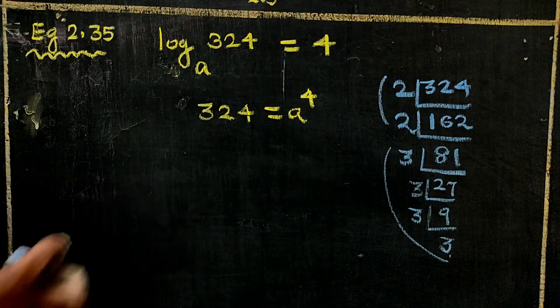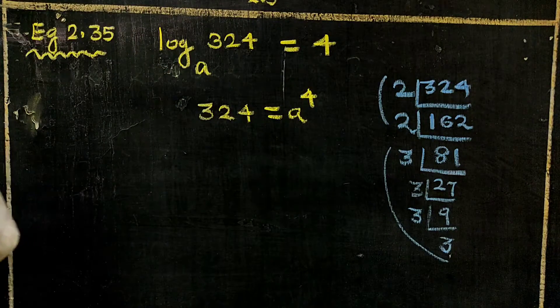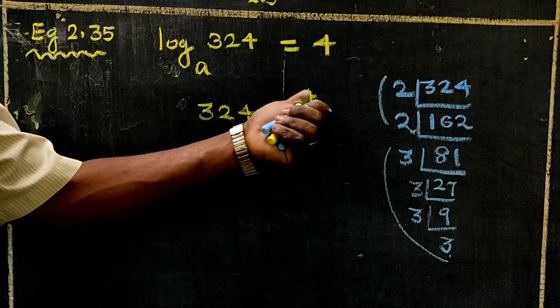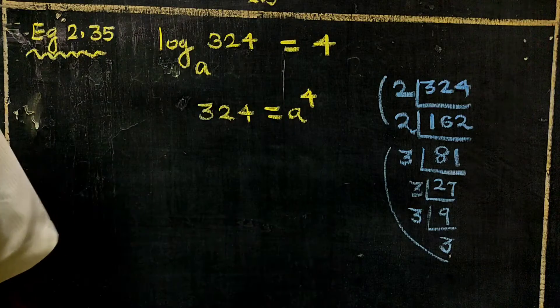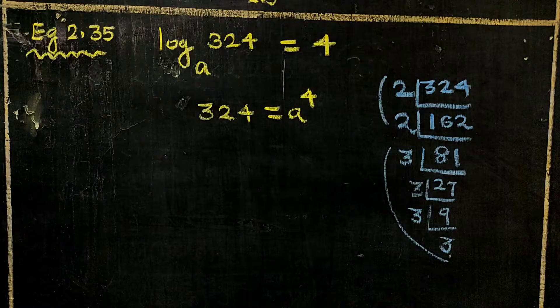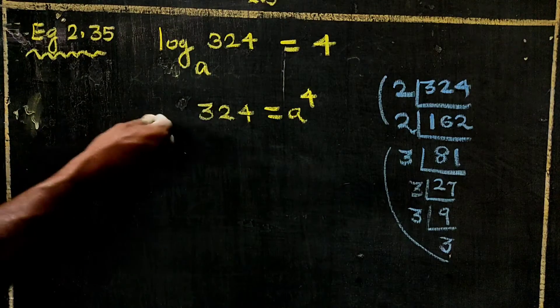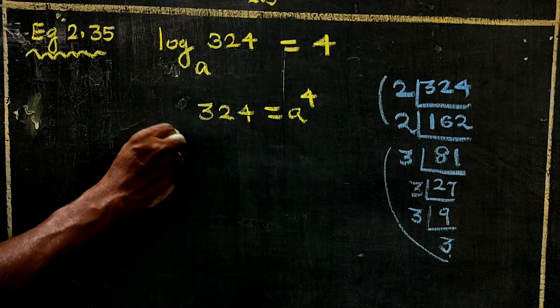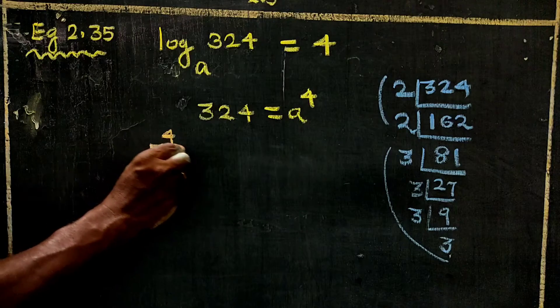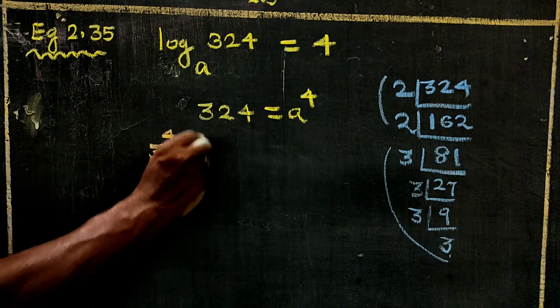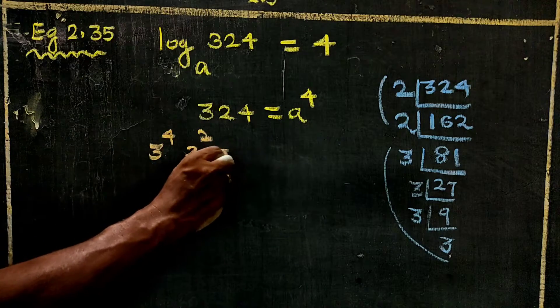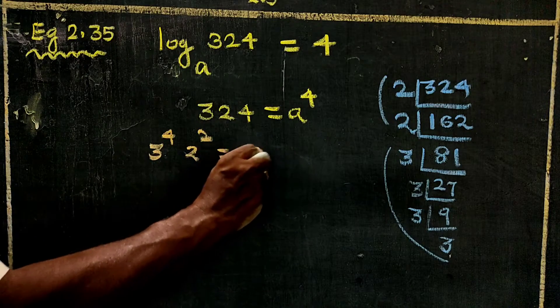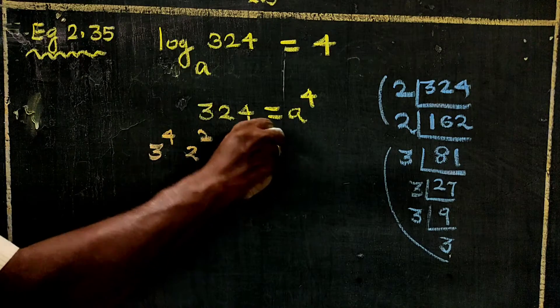There are two 2s. There is no power in 4. How can we do this? 3 to the power 4, into 2 squared, is equal to A to the power 4.